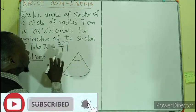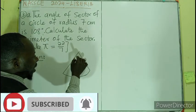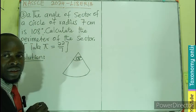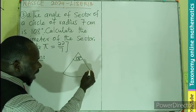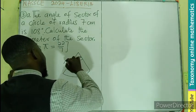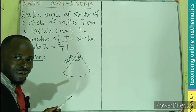In this case, the angle sustained is given as 108 degrees. Then this is also given to us as the radius, and I'll write it here: 7 centimeters.